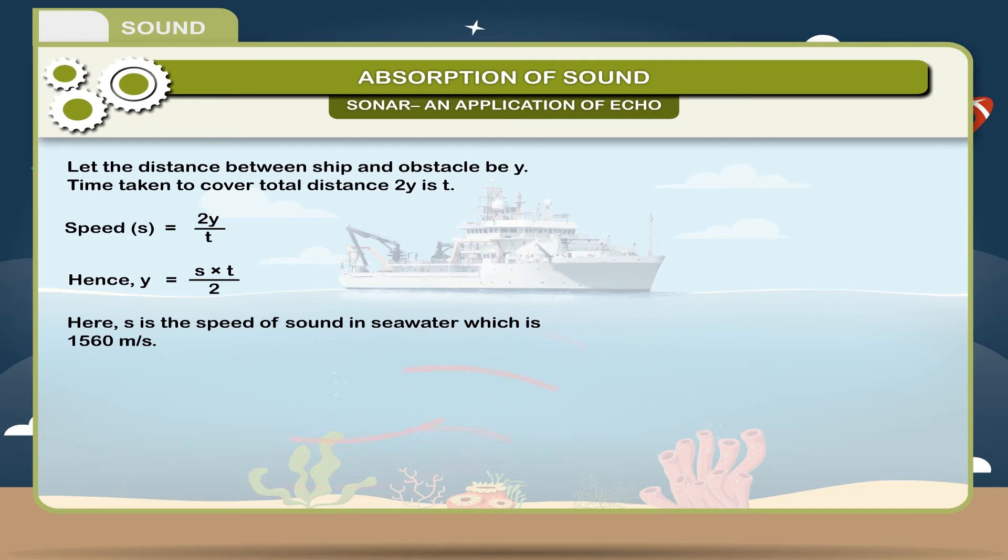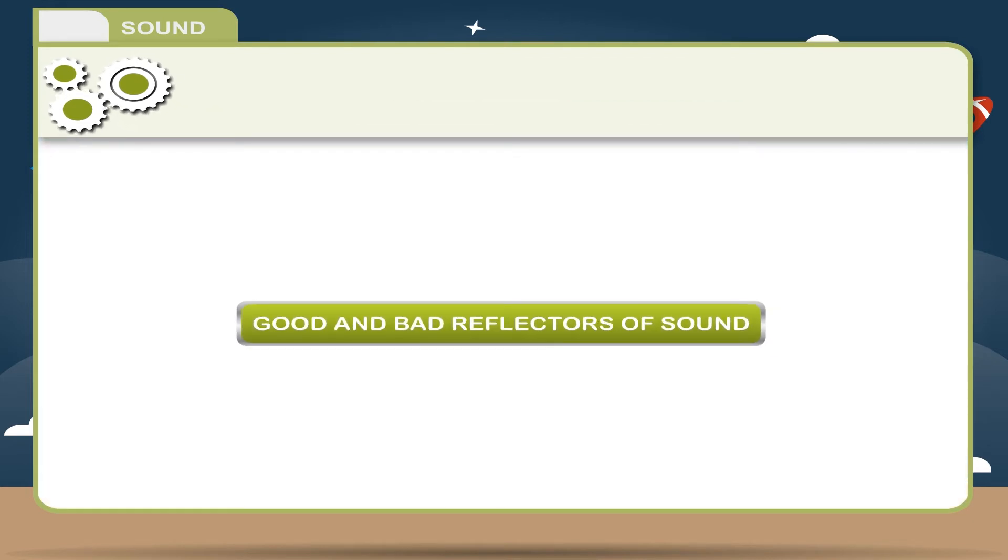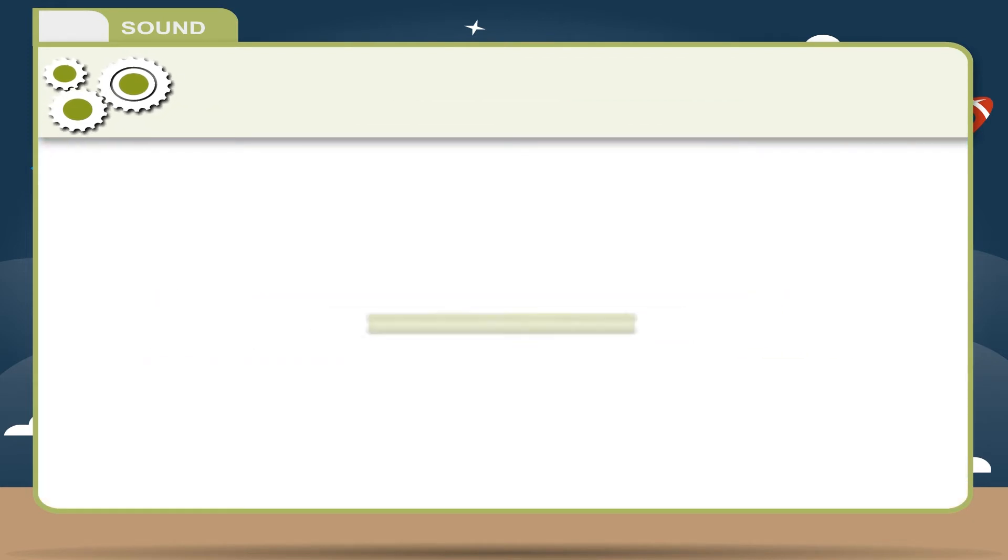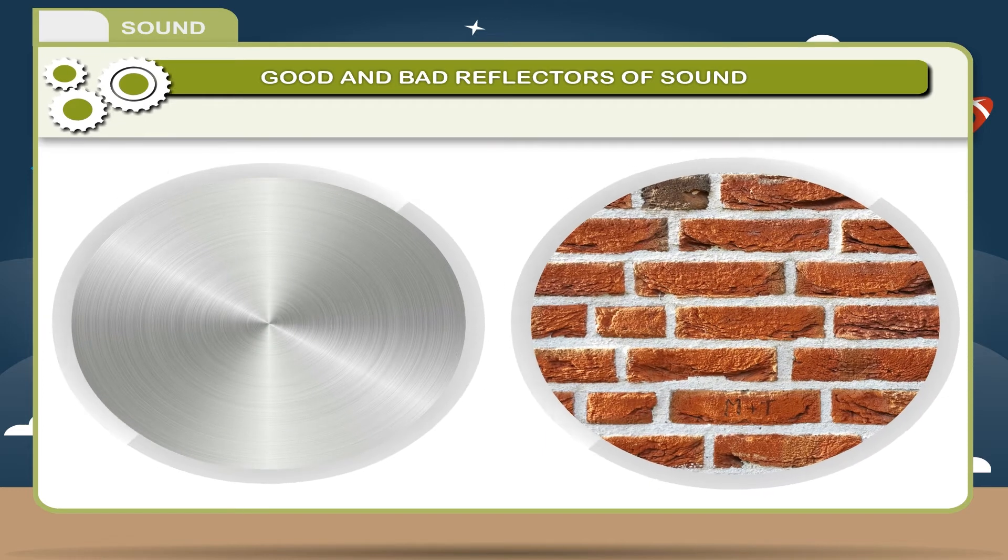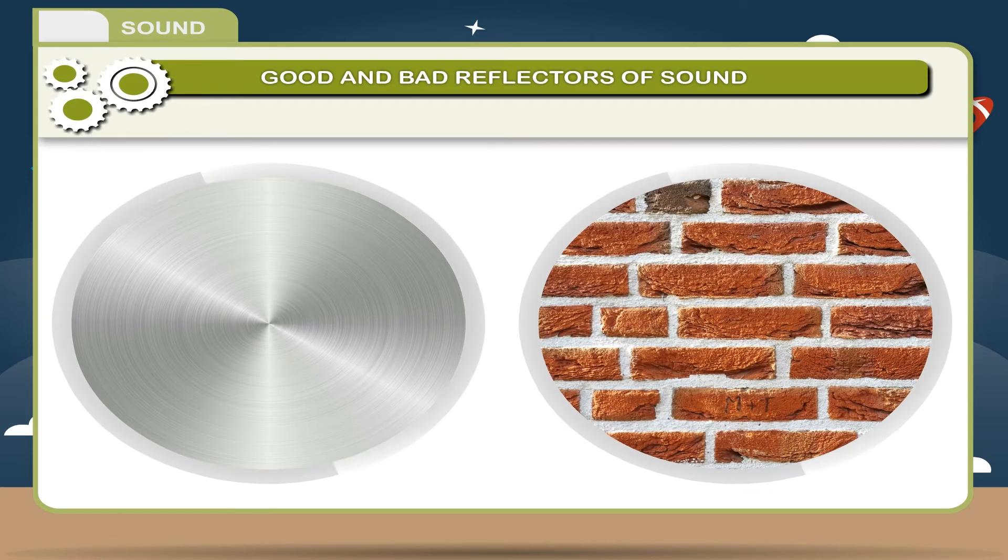Good and bad reflectors of sound. Hard materials like metals and brick walls are good reflectors of sound. They produce good echoes.